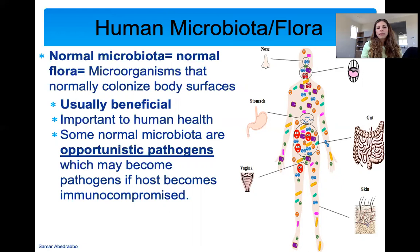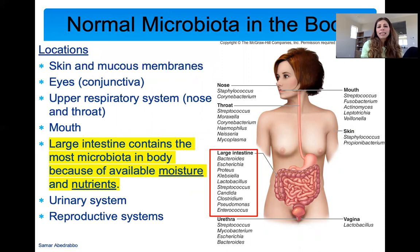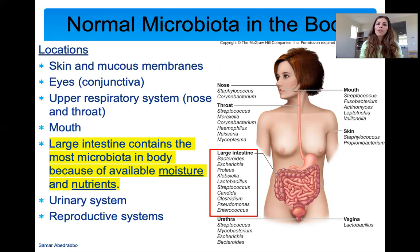We see our normal microbiota in different locations throughout the body. You see microbes all over — anywhere you can think of. We see them in your skin and various mucous membranes, your eyes, and the upper respiratory system — that's your nose and throat. We do not see microbes in the lower respiratory system, which is your lungs. Your lungs should be sterile; if you have microbes in there, they can cause something very bad. The mouth has a ton of microbes.